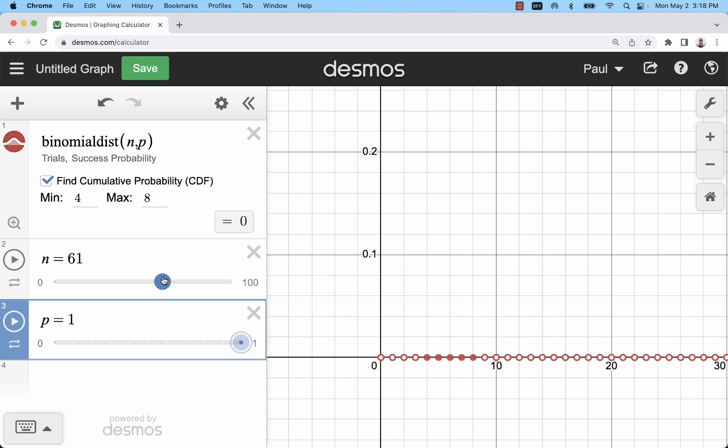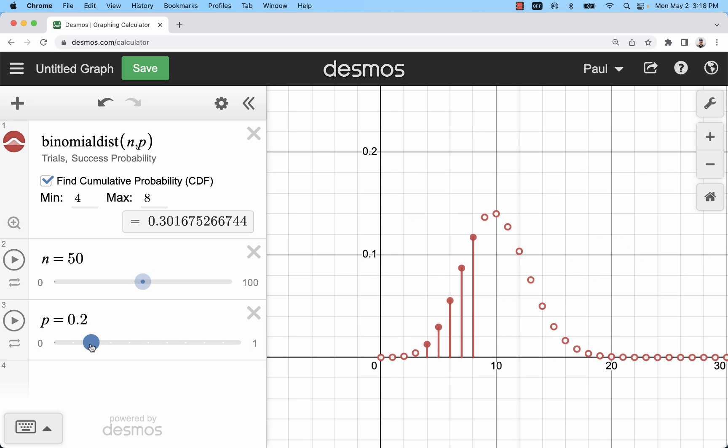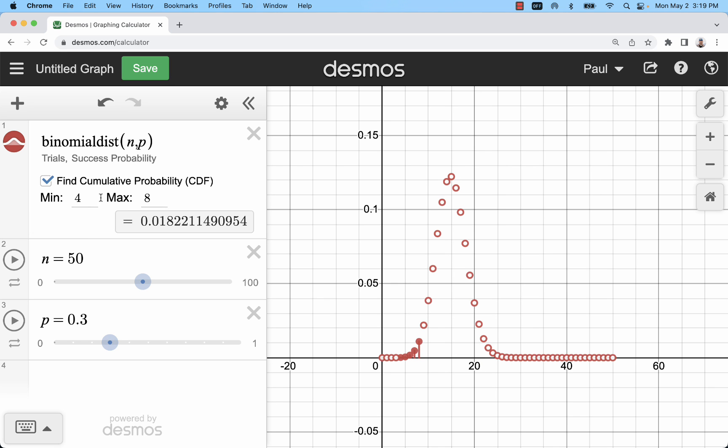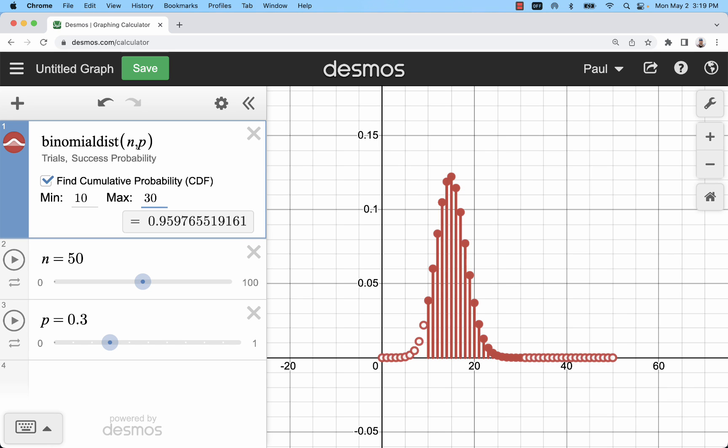Start with an n of 50, and a probability of 30%, and then zoom. And now we can see different probabilities, for example, from 10 to 30 successes.